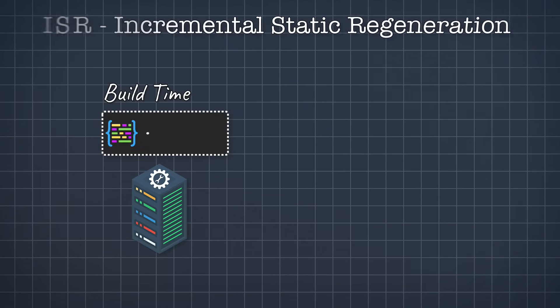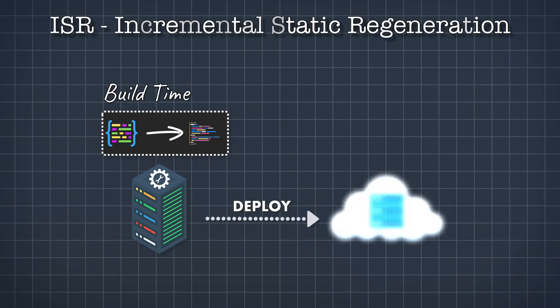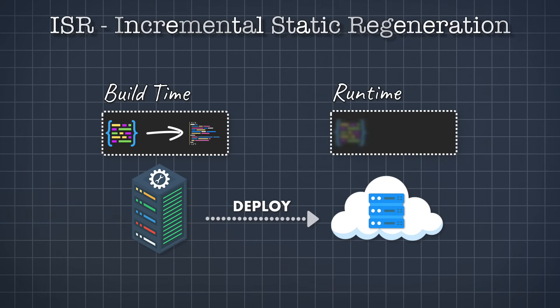ISR stands for incremental static regeneration. It is a hybrid approach that combines the benefits of both SSR and SSG. With ISR, content is initially generated statically like SSG, but after that it can be regenerated in the background like SSR. This allows you to update the content from time to time without the need to rebuild the entire site. Initially we generate the static pages at build time like SSG and deploy them, but after a predetermined condition like a duration or a triggered event, we update the generated files so they contain fresh content. You can think of ISR as SSR plus caching — giving you the fast response times of static site generation and the dynamic content support of server-side rendering.